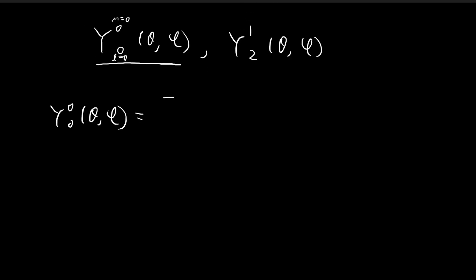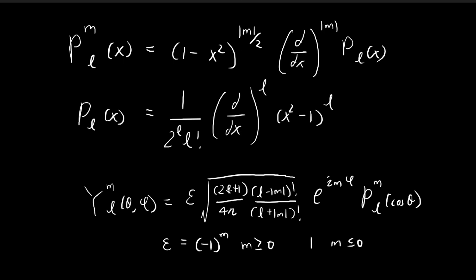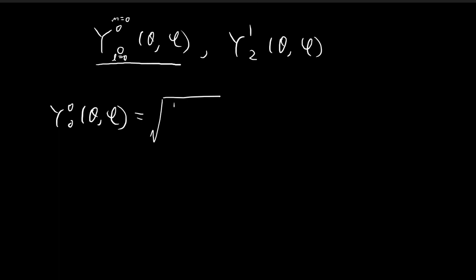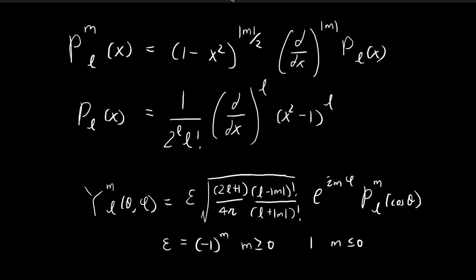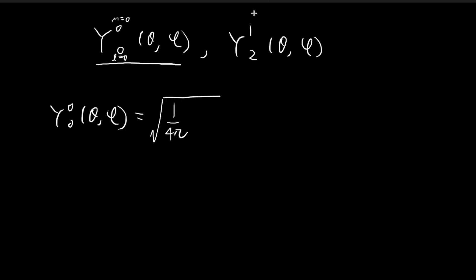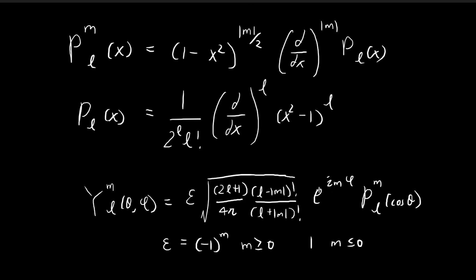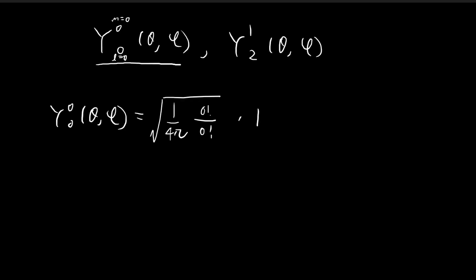For the square root, we have 2l+1 with l=0, giving 1 over 4π. For the factorials, we have (l−m)! = 0! and (l+m)! = 0! at the bottom. Since 0! = 1, both factorial terms equal 1. We also have e^(imφ) with m=0, so e^0 = 1, and we multiply by 1.